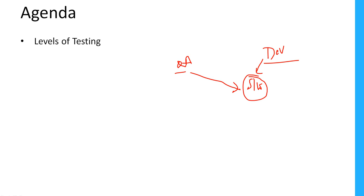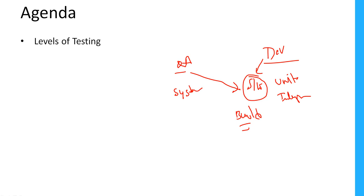From the QA perspective, we don't know what code the developers have written inside, but we receive the integrated software — what we call a build — and we conduct complete testing on that build. On the developer side they perform unit testing and integration testing, while from the QA perspective we perform system testing and user acceptance testing (UAT).